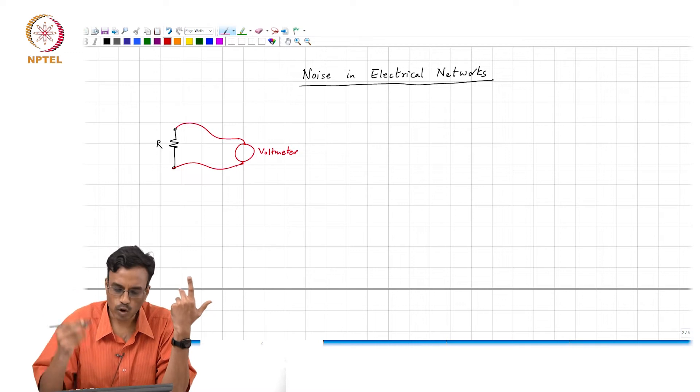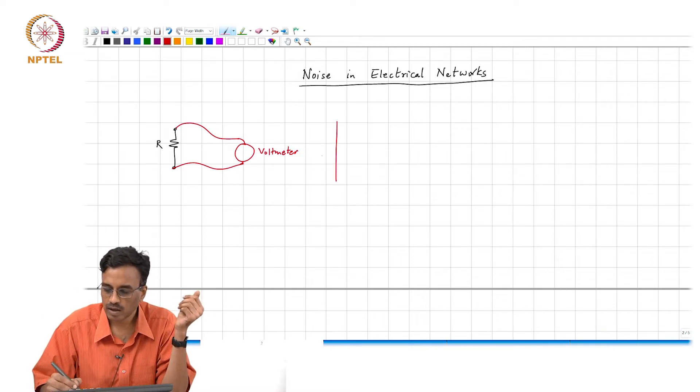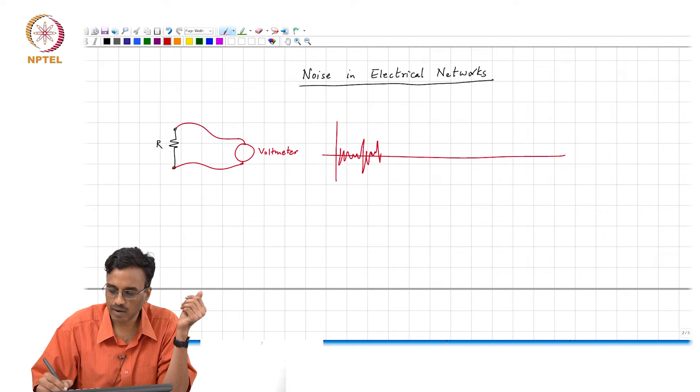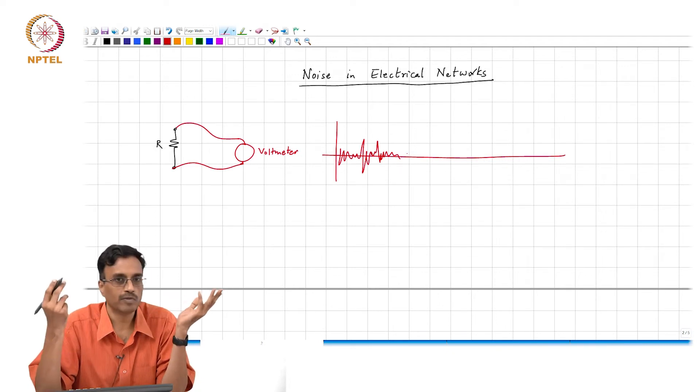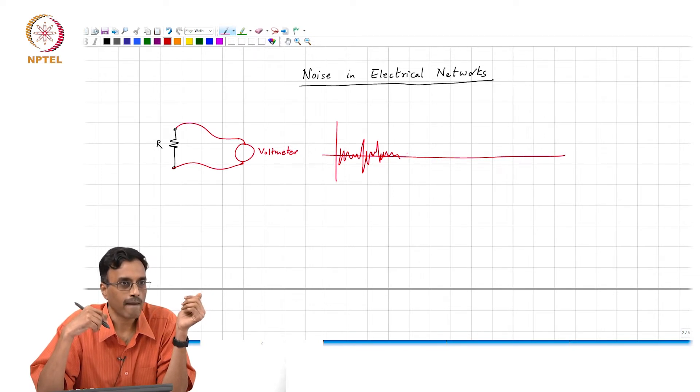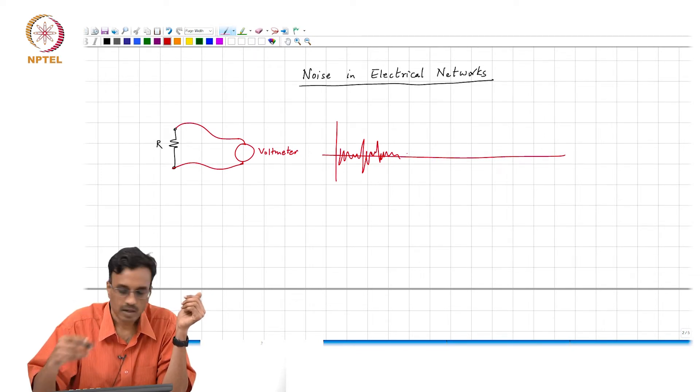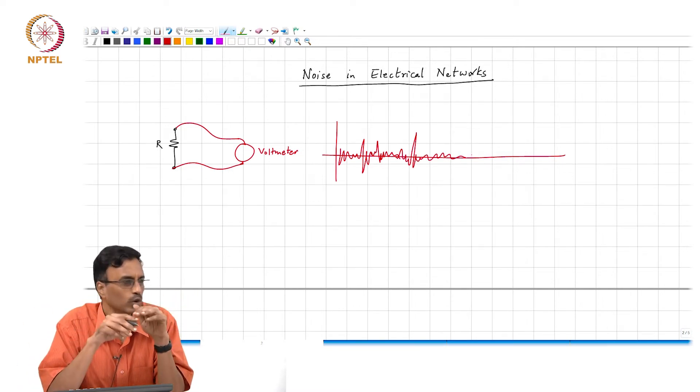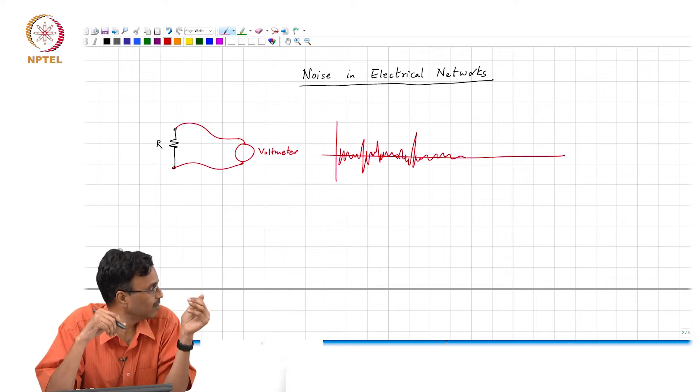So you would think the voltage is zero, but it turns out that you will see a very random waveform. It is almost impossible for me to draw a random waveform, alright. So but you will see some random waveform.